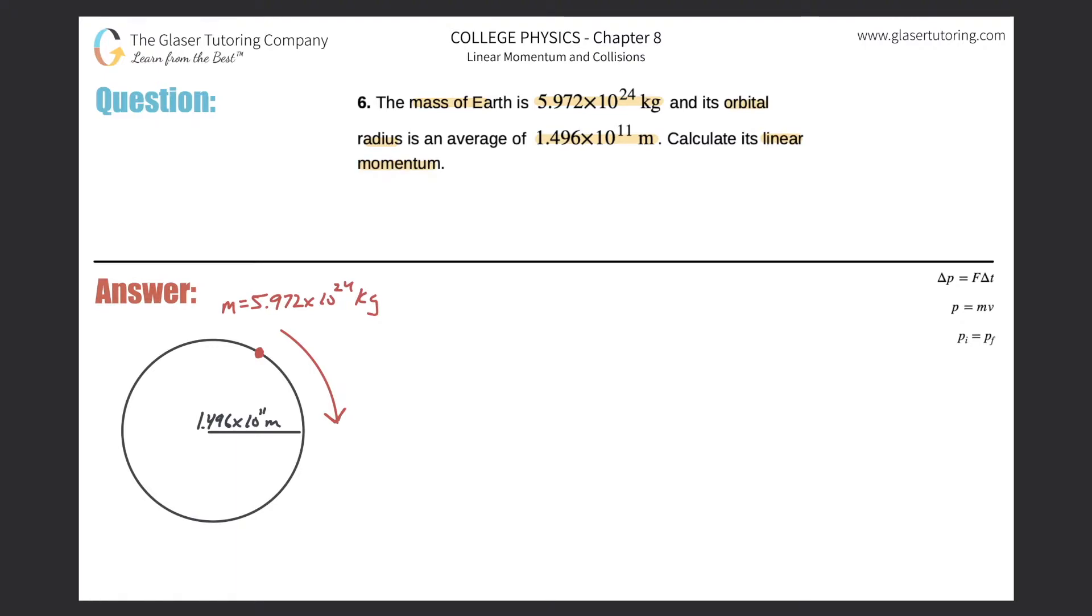They want us to calculate linear momentum, and therefore in order to calculate linear momentum I need to know this formula over here on the right hand side where linear momentum will equal the mass of the object that's moving multiplied by then the linear velocity.